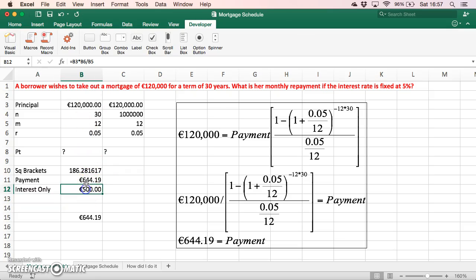The interest component of this mortgage payment at the first payment would be the principal multiplied by 5%, so 5% divided by 12 (r divided by m), and that's €500. The principal component in the first mortgage repayment would equal €644.19 (the monthly repayment which is fixed over the entire term) minus the interest cost of €144. We'll look at that later.